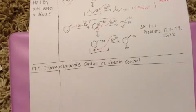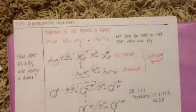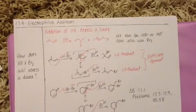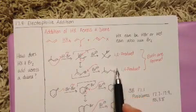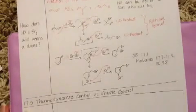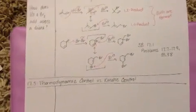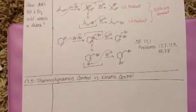So, the next thing that we're going to talk about is controlling the formation of 1,2 and 1,4 products in the addition of HX to a diene. And this type of control is referred to as thermodynamic or kinetic control.